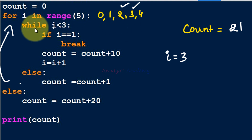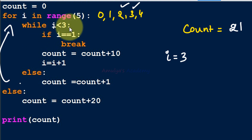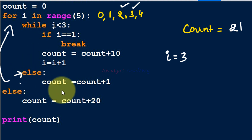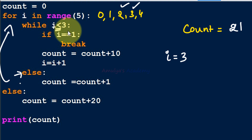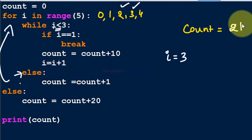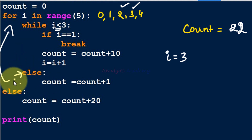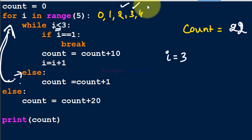Control goes back to the for loop and i is now 3. We check while 3 < 3 — false — so the while loop condition fails immediately. Control goes to the while's else block; since the loop was not terminated by break (it ended because the condition failed), the else block executes and count becomes 22.